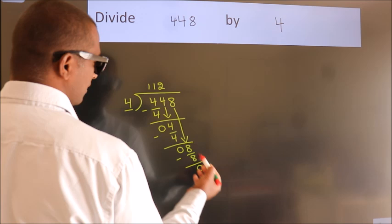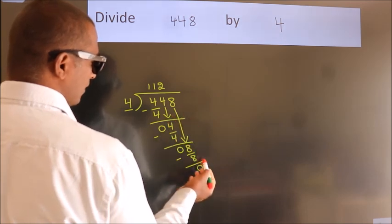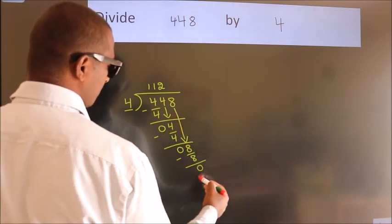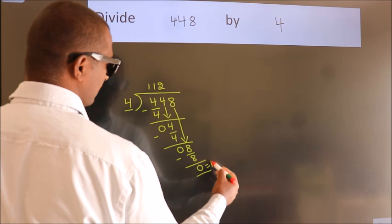After this, no more numbers to bring it down. So we stop here. This is our remainder. This is our quotient.